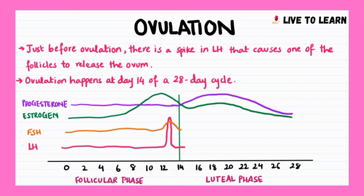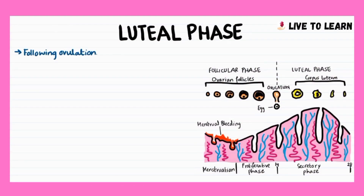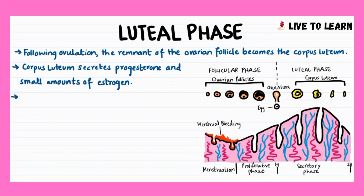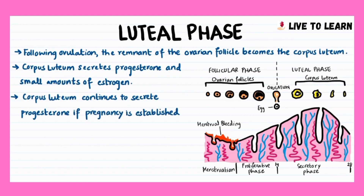If fertilization does not occur, the levels of progesterone and estrogen drop because the corpus luteum has degenerated, resulting in the breakdown of the endometrial lining, and menstruation occurs. Following ovulation, the remnant of the ovarian follicle becomes the corpus luteum. The corpus luteum secretes progesterone and small amounts of estrogen, and continues to secrete progesterone if pregnancy is established. This function of secreting progesterone is later taken over by the placenta.